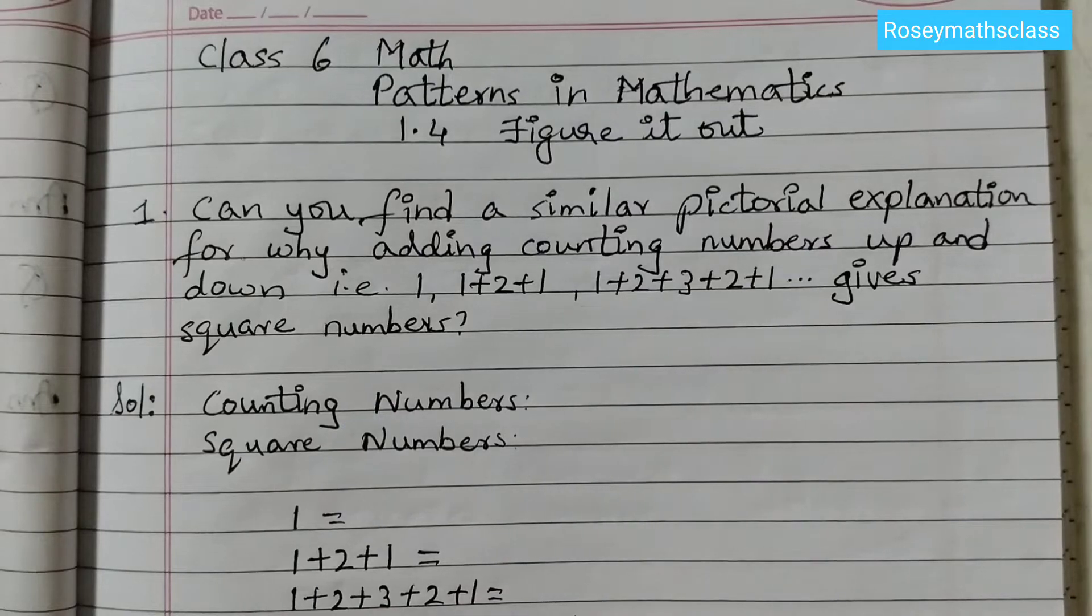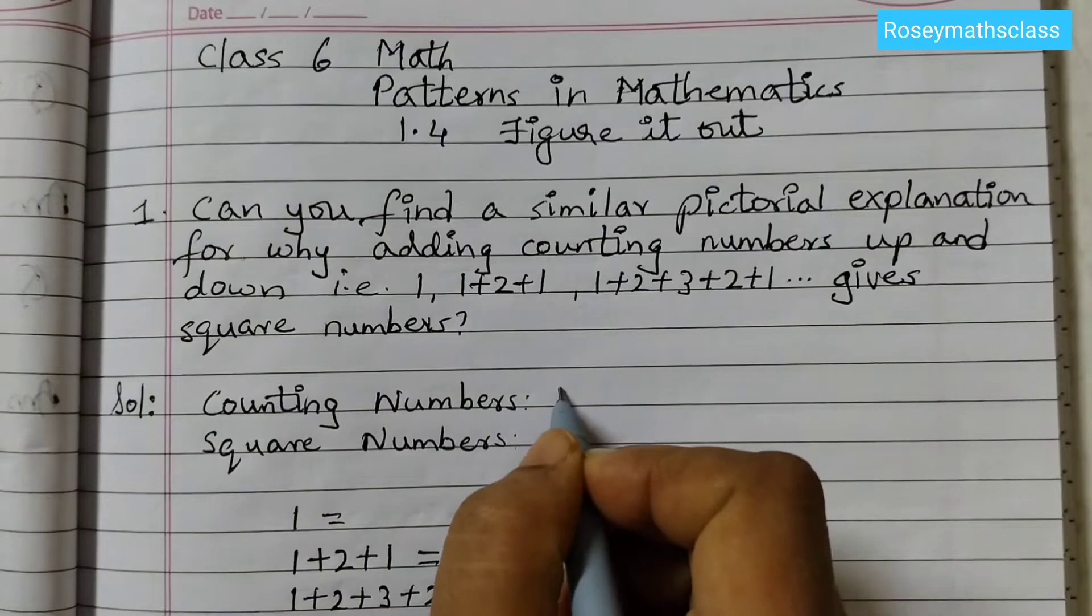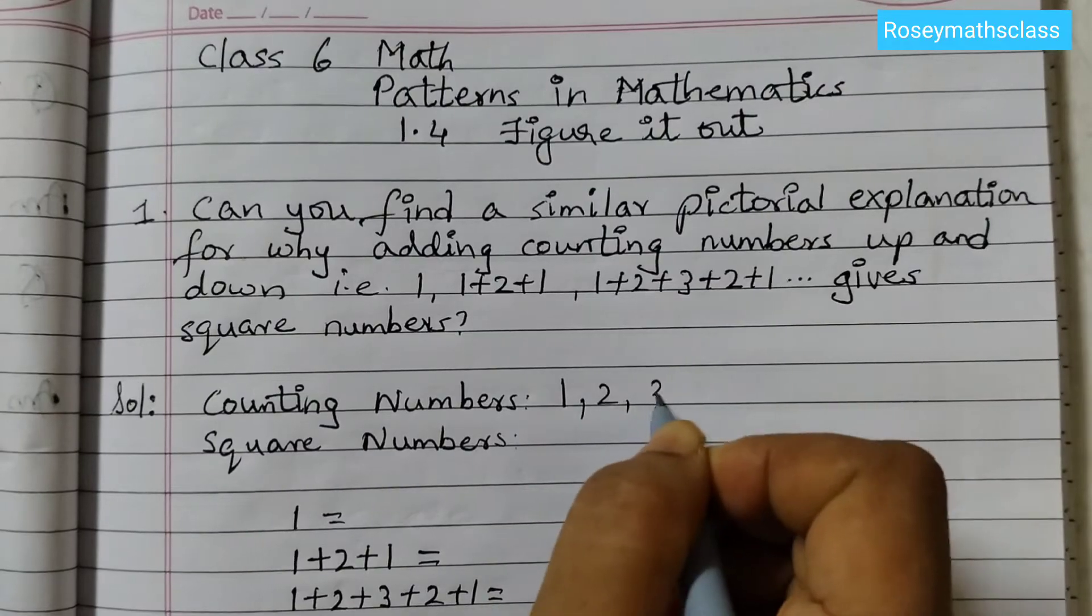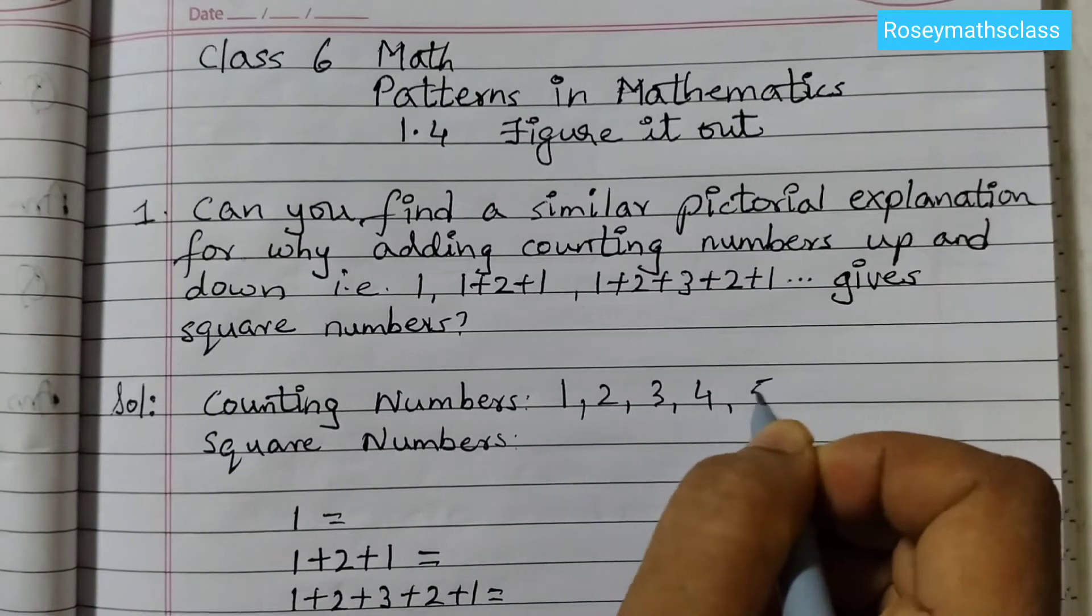You must know what are counting numbers. Counting numbers are numbers starting from 1, then 2, 3, 4, 5, 6 and so on.